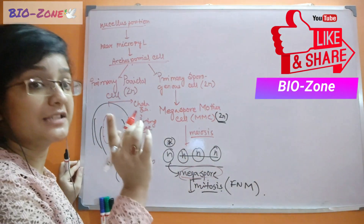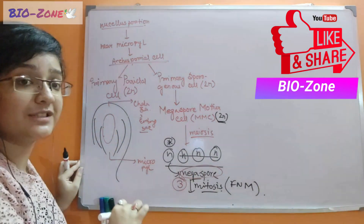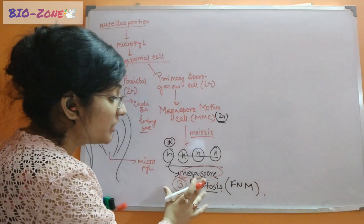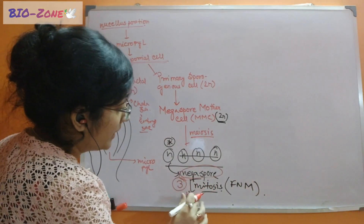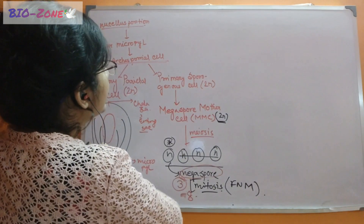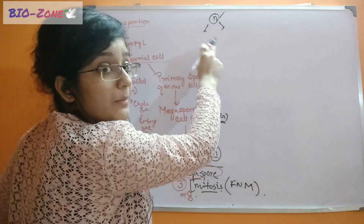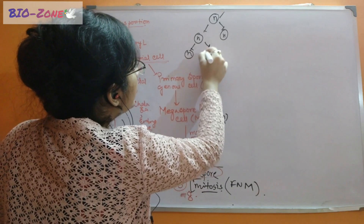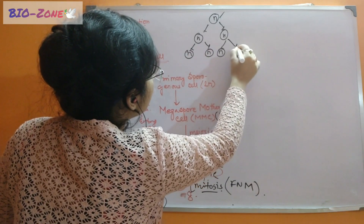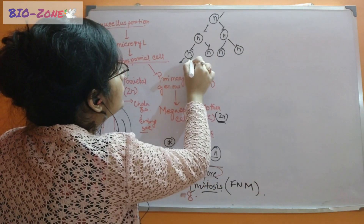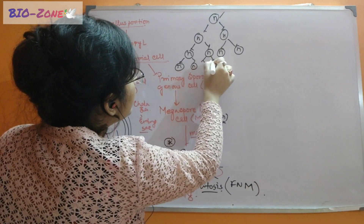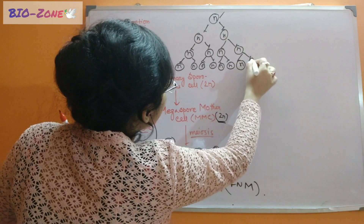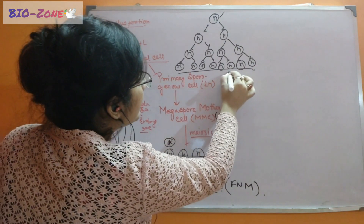This megaspore will perform three successive rounds of mitosis. So how many nuclei will be there? Total eight nuclei will be formed. From one nucleus, two daughter nuclei develop; from two they form four; from four they perform mitosis in the third round, ultimately giving us eight nuclei.